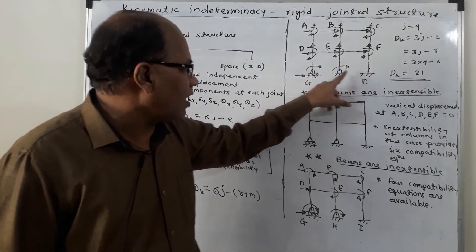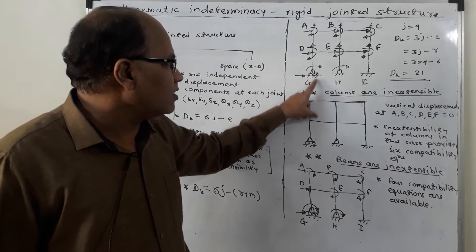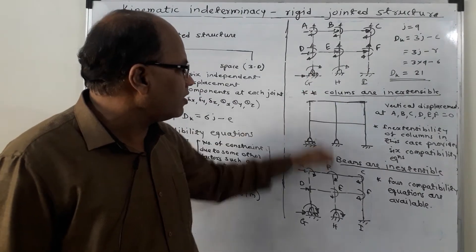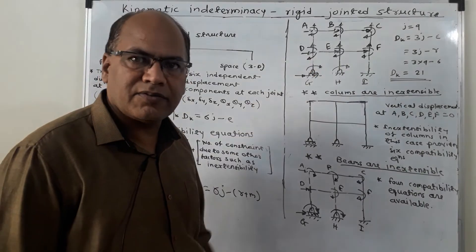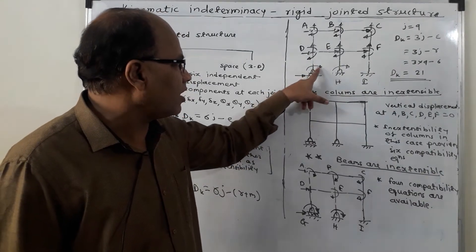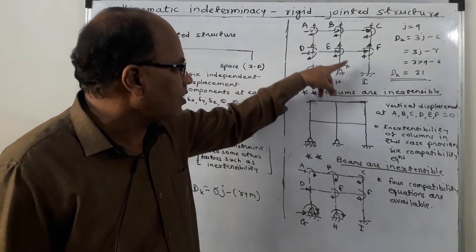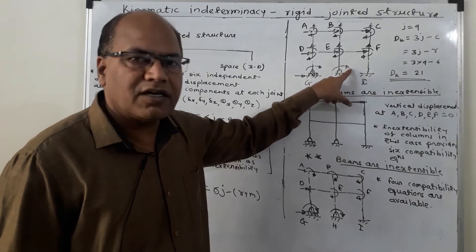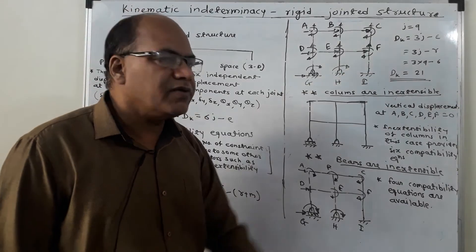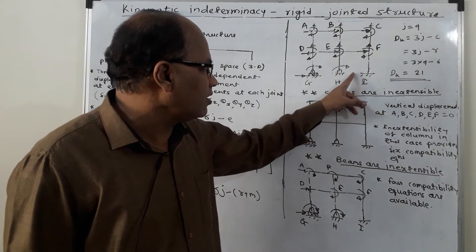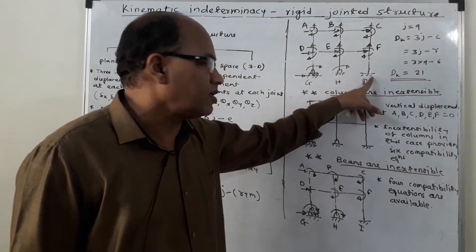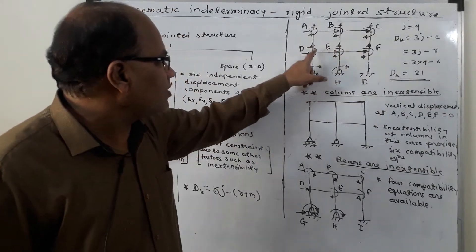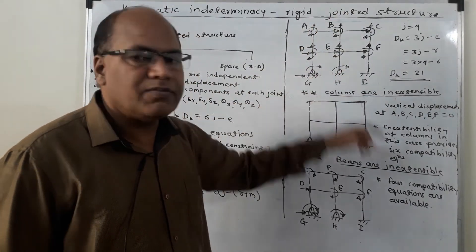There are 3 supports. At support G, the vertical reaction takes place because it is a roller support resting on a horizontal plane, so vertical reaction is the constraint for vertical displacement. Only horizontal displacement and rotation can happen — so 2 displacement components at the roller support. At hinge support H, vertical and horizontal components of reaction provide 2 constraints, so only 1 displacement component, the rotation, can happen. At fixed support I, which provides vertical reaction, horizontal reaction, and fixed end moment, no displacement component is possible. So 18 from rigid joints plus 3 from supports makes a total of 21.